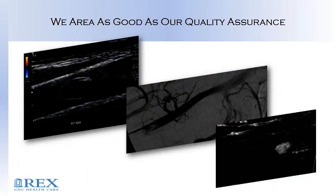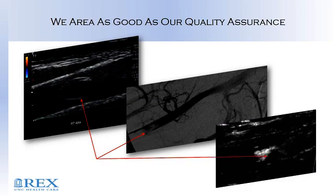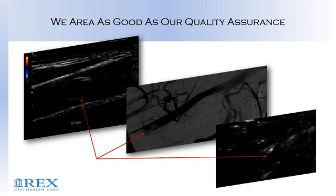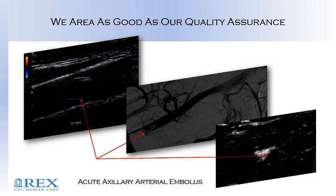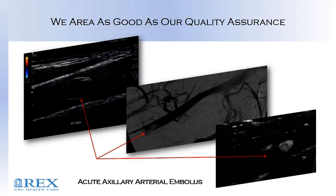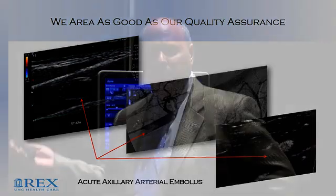This patient came to our ER with no pulses in the right arm. If we look at the first and second image, this is acute arterial embolus. Our third image is secondary imaging with SMI, and you can see the delineation around the thrombus. Most physicians at this point are going to ask: where did this come from?